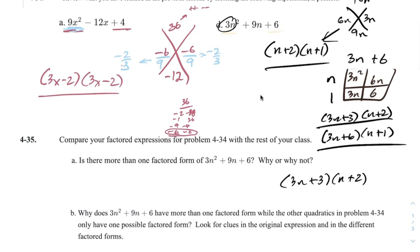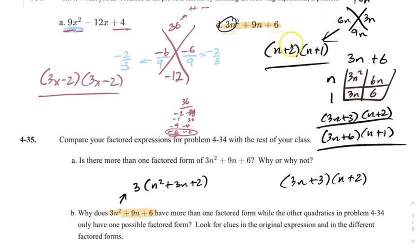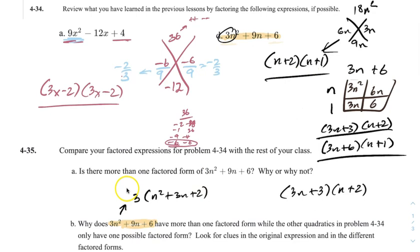Why does 3N squared plus 9N plus 6 have more than one factor form while the other quadratics only had one? What's different is that this has a common factor. If you look at 3N squared plus 9N plus 6, I could factor out a 3 from all of them — they all divide by 3. So if you factor out the common factor first, you get a simpler expression. That's always going to be our first step. The shortcut method essentially factored this without the common factor, which is why it gave different-looking answers.